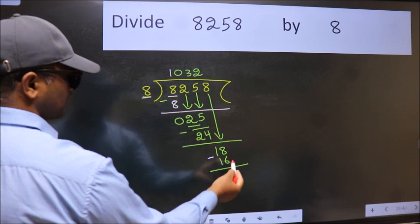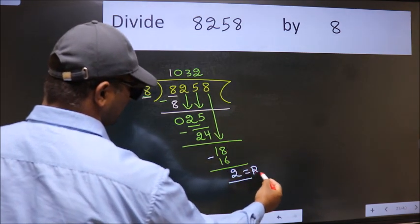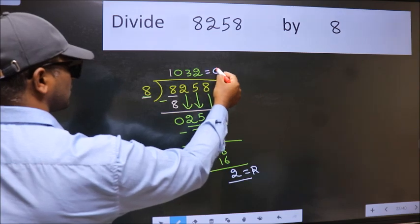No more numbers to bring down. So we stop here. This is our remainder and this is our quotient.